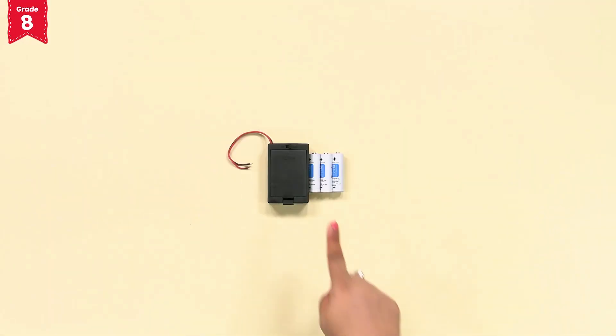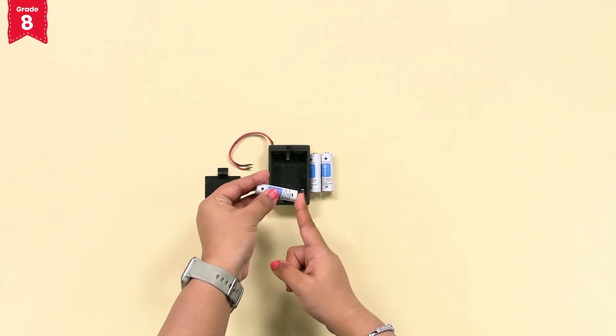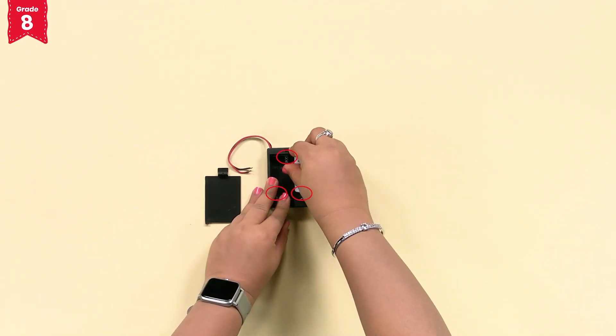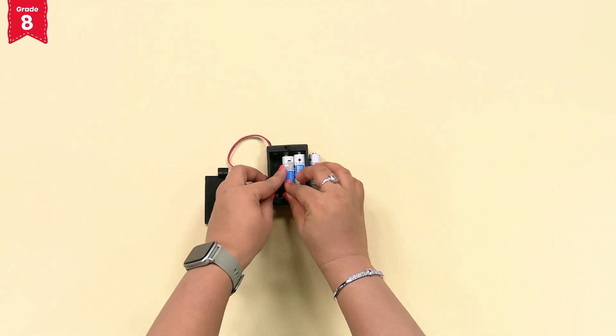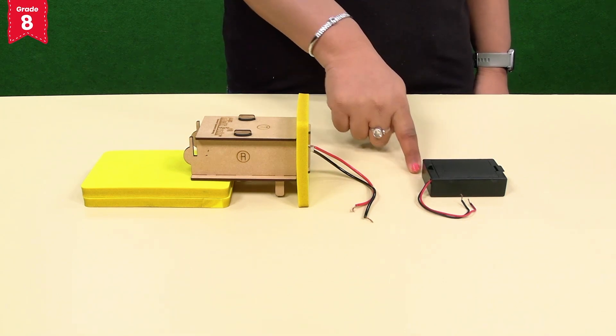Put the batteries into the battery holder. The negative terminal of the battery will go towards the spring side of the battery holder like this. Let's close the battery holder now and attach its wires to the wires of the LED light.